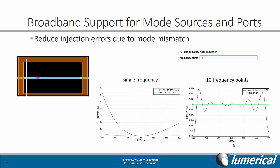Another feature that improves the parameter extraction process for passive components is that all mode sources and port objects have been updated to support broadband injection — a feature that has been heavily requested by our users. Injection errors due to mode mismatch can now be significantly reduced by using a few frequency points instead of a single frequency point. In many cases the mode profile is relatively constant as a function of frequency, so a single frequency point still works. But for cases where the mode profile changes drastically, such as in a very narrow waveguide, you may want to use the multi-frequency option by selecting the multi-frequency mode calculation tag and specifying five or ten frequency points to significantly reduce injection error.